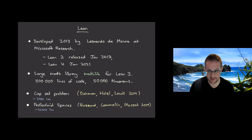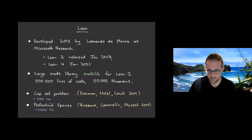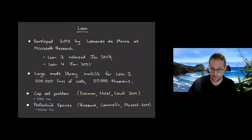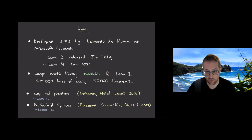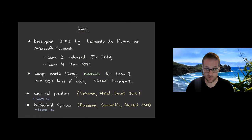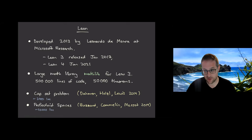Perfectoid spaces are very deep and technical algebraic objects defined by Fields Medalist Peter Scholze. They are a definition built on towers of other definitions — you need topological spaces, schemes, varieties, sheaves, etc. to get to the definition of a perfectoid space. They were formalized in 2019 with around 10,000 lines of code just for the definition. This is really seen as a proof of concept that Lean is up to handling higher mathematics. When you use formalizers, you gain a healthy respect for definitions — they are very subtle and very important.